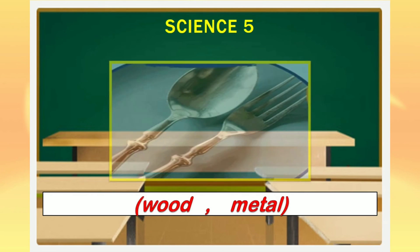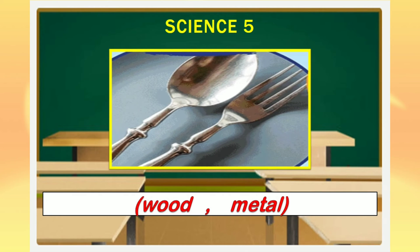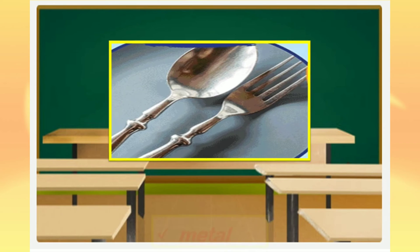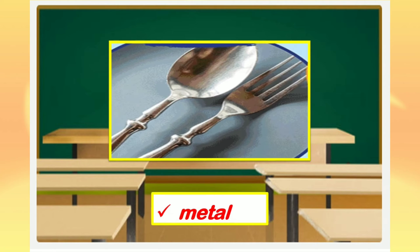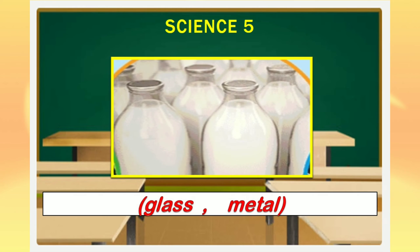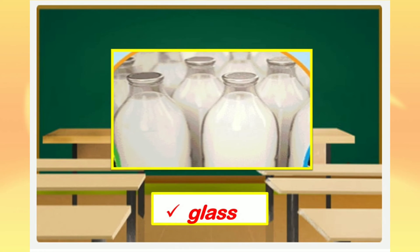Let us proceed to number 2. Look at these objects. Are they made up of wood or made up of metal? The correct answer is metal — they are made up of metal. How about these objects? Are they made up of glass or are they made up of metal? The correct answer is glass.